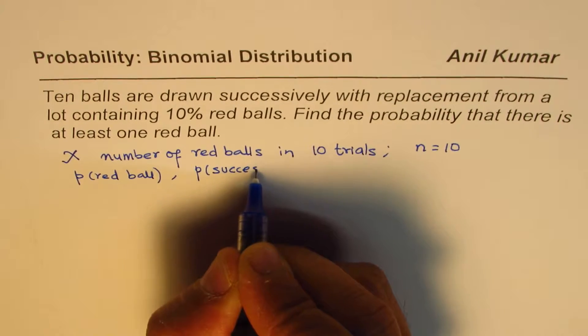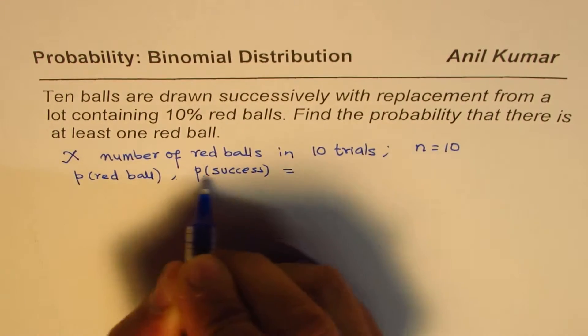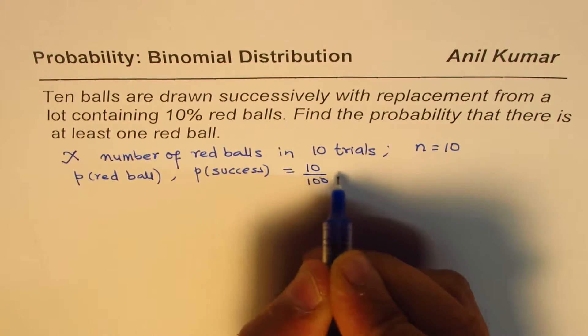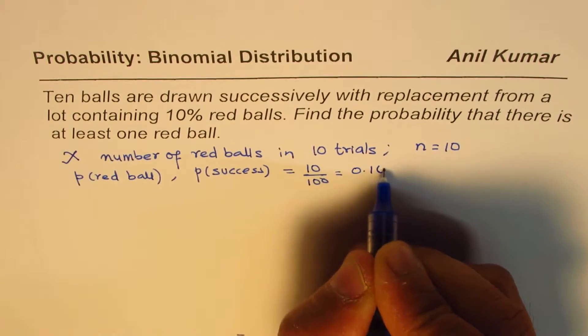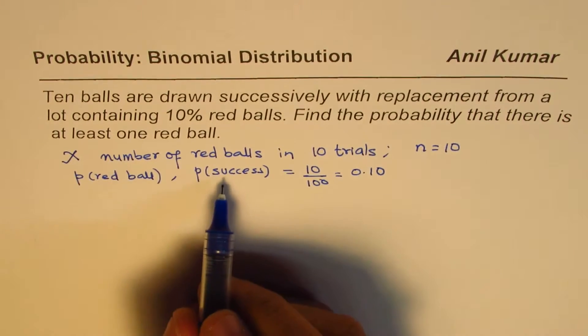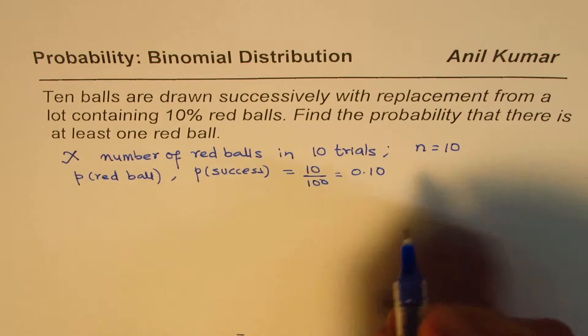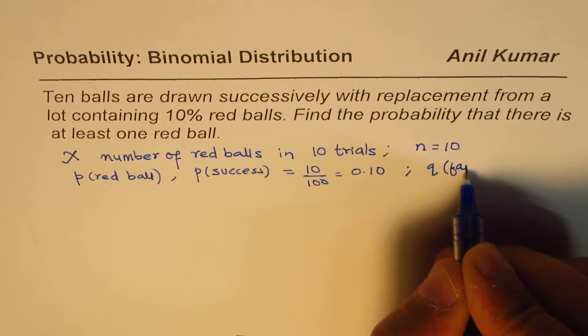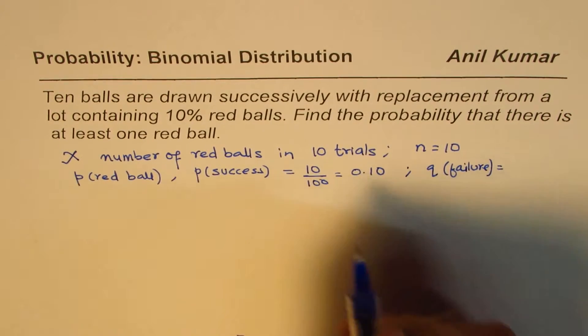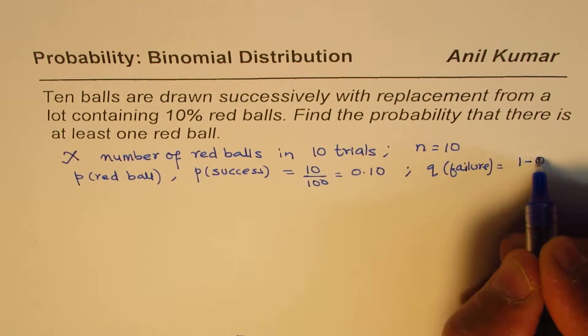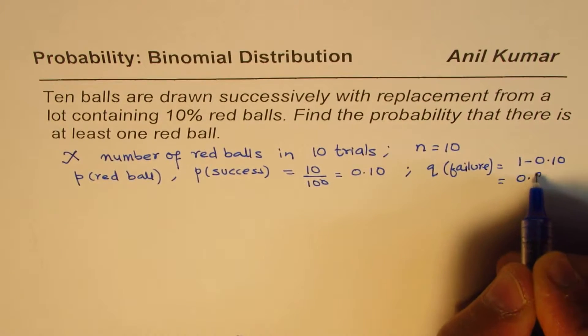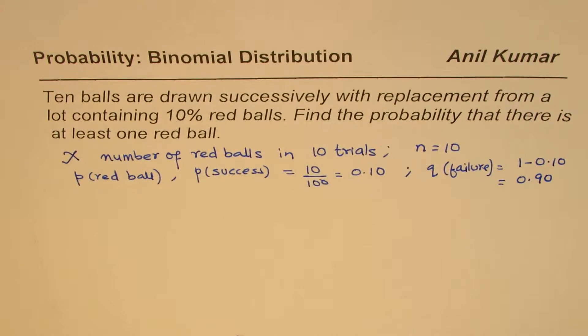In our case, we'll treat this as the probability of success. So that is the probability of success, which normally lowercase p is, is 10%, that is 10 over 100 or 0.10. If probability of success is 10%, what is q? The probability of failure will be 1 minus 0.10, so that is 90%. So that is the value of q.